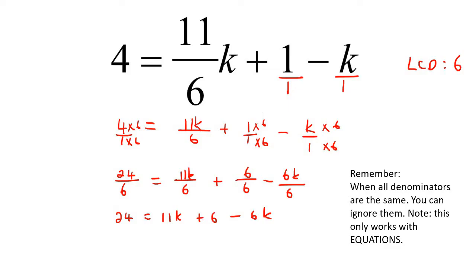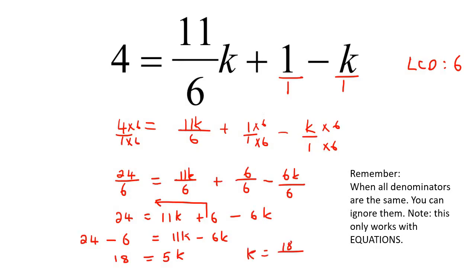Now take all variables to one side and numbers to the other. We keep the K terms on the right: 11K minus 6K. On the left we get 24 minus 6, which is 18. On the right we get 5K. So K equals 18 over 5.